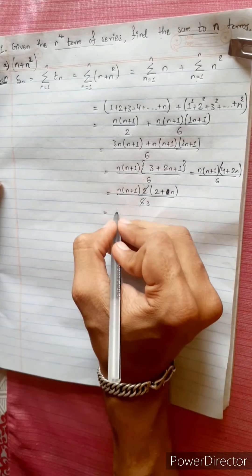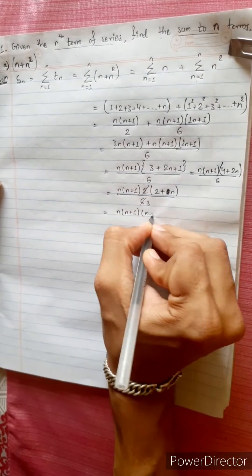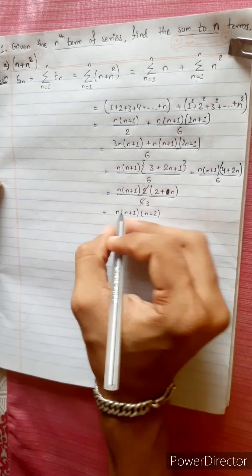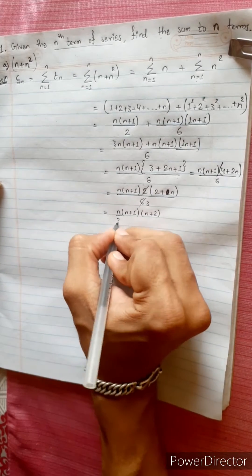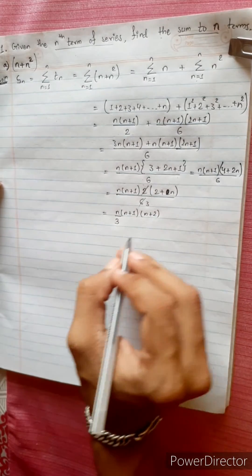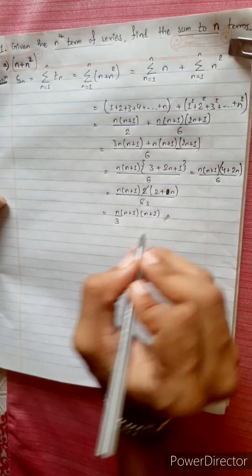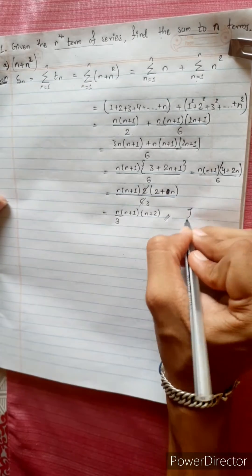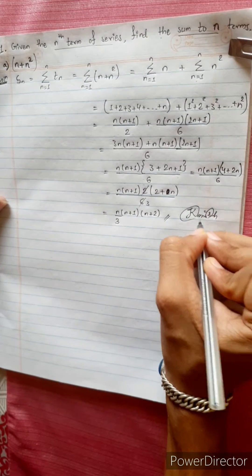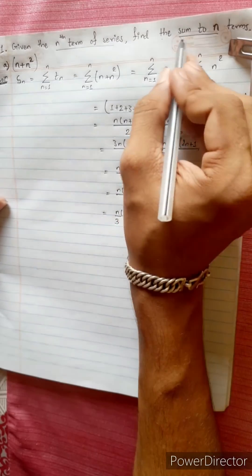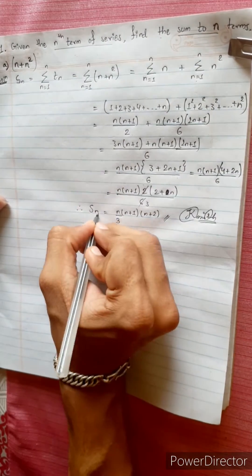Therefore, the final answer is n(n+1)(n+2) divided by 3.